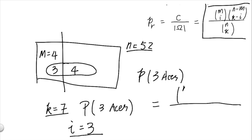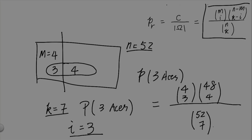So we have 4, choose 3, times m minus m, in this case will be 48, choose k minus i will be 4, and on the denominator we have 52, total number of cards, choosing 7 cards. That gives us a numerical answer of the probability of getting 3 aces when we draw 7 cards.